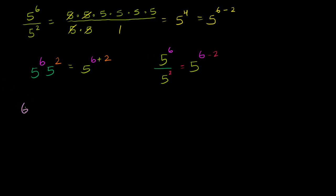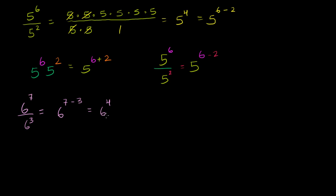Let's do more examples. What is 6 to the 7th power divided by 6 to the 3rd power? Well, we can just use this property. This is going to be 6 to the 7 minus 3 power, which is equal to 6 to the 4th power. And you could multiply it out like we did in the first problem and verify that it will indeed be 6 to the 4th power.